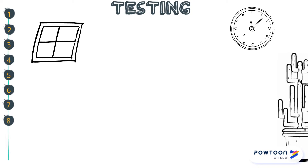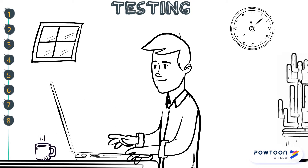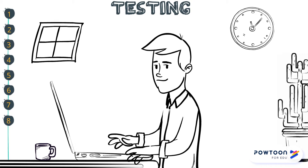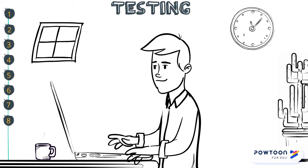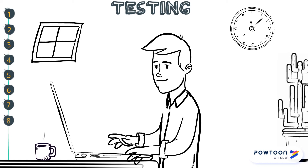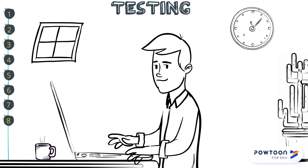The final step for the course developers is to take the course in a student role to find any remaining errors before actual students see the course. Mistakes are much easier to correct before students are placed in the courses.